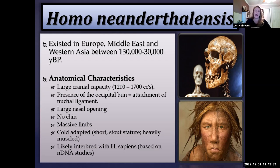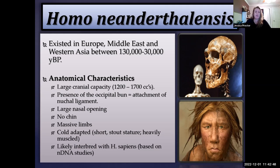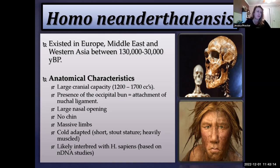Neanderthals had other adaptations for cold: a wide nasal aperture, no chin like we have — they have either a vertical or receding mandibular symphysis — and very thick, robust bones from the neck down. Their overall body structure was short, stout, and heavily muscled, which is consistent with Allen and Bergman's rule: cold-adapted mammals tend to be short and stout, while warm-adapted mammals tend to be taller, lankier, and leaner.